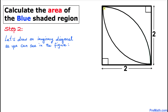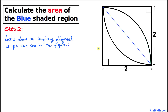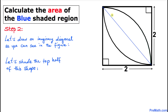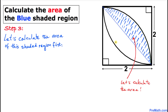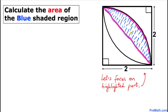Next, let's draw an imaginary diagonal connecting these two points. Here is our much nicer-looking graph. As we can see, this diagonal divides the region into two equal parts. Now let's shade the top half of the shape and calculate the area of this shaded region first.